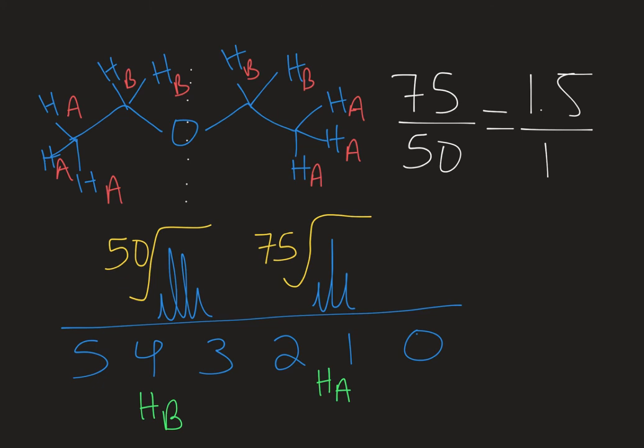I can't have half of a proton coming off of a carbon. So when you get a fraction like that, you're going to multiply by some factor to get to a whole number ratio for your proton. So if I multiplied by 2 in this case, I would get a ratio of 3 to 2. And you can see from our structure that the relative ratio of HB to HA is 2 HBs for every 3 HAs.